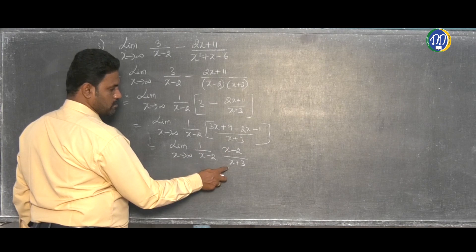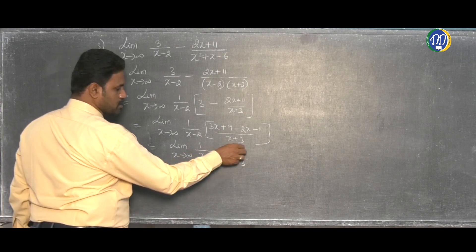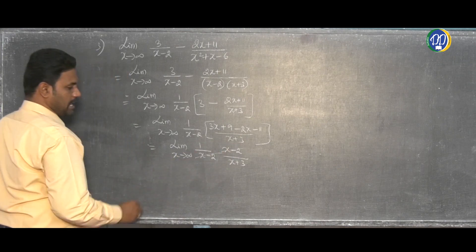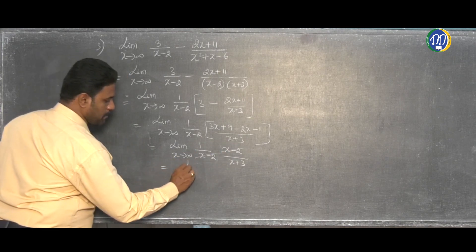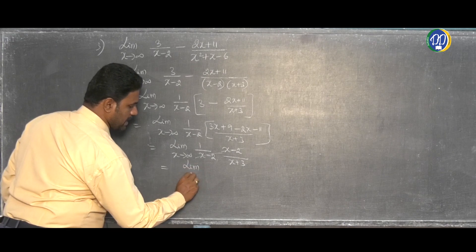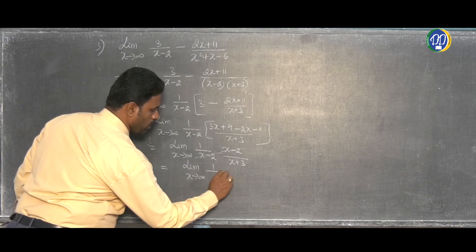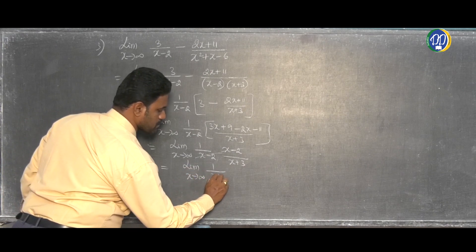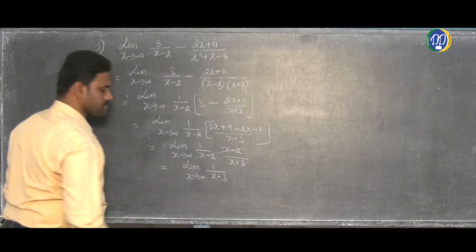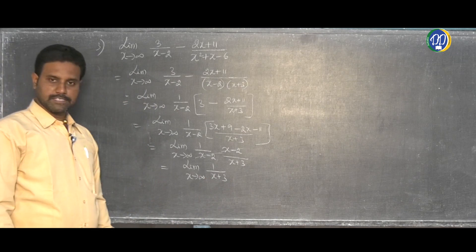Cancel. The limit x tends to infinity simplifies. So the result is the limit x tends to infinity of 1 by (x plus 3). We now have limit x tends to infinity of 1 by (x plus 3).